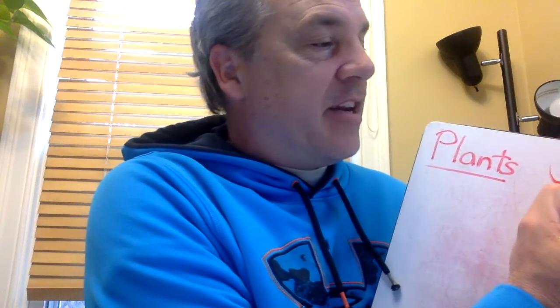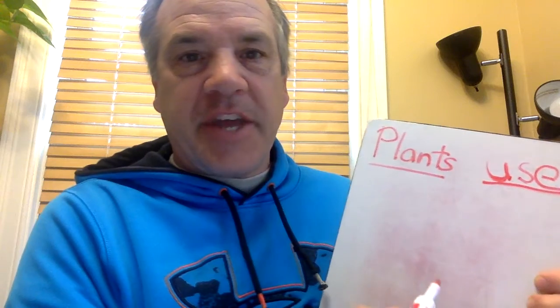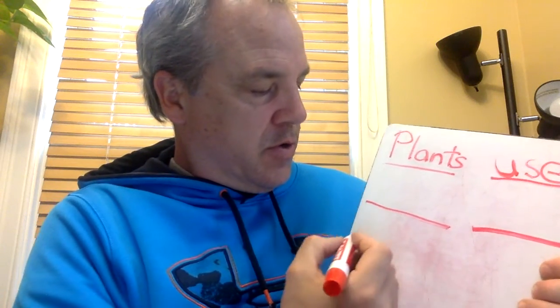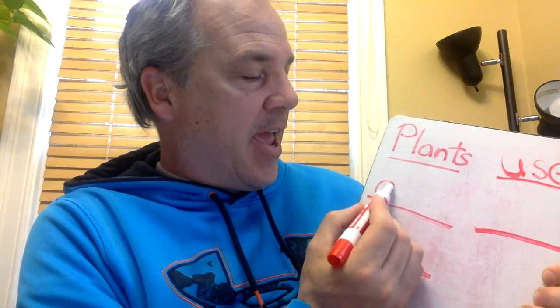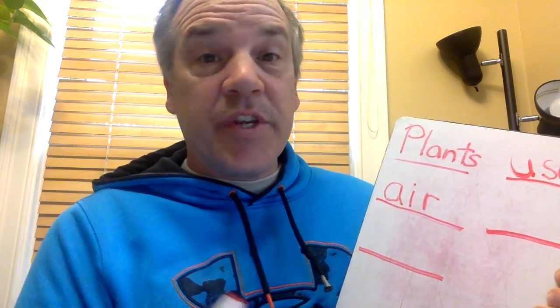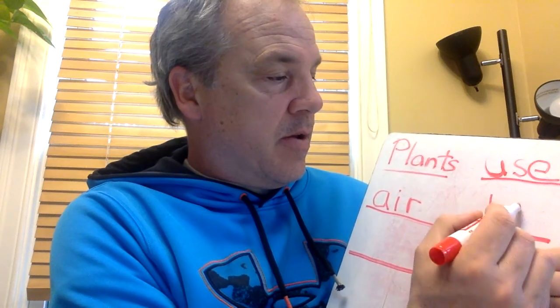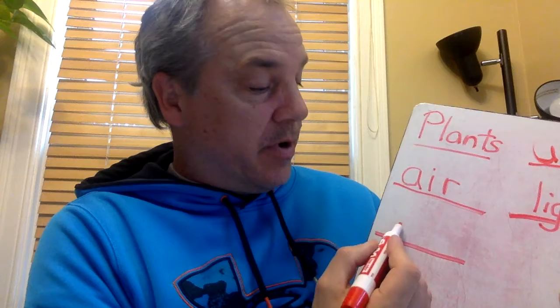Plants use air, water, and sunlight to make food. So let's write that: 'Plants use...' — you need 'use,' that's a snap word. Plants use air — A-I-R. I'll give you the word 'air.' Then light — we just wrote it. And water — which you should have on another page. Plants use air, light, and water.